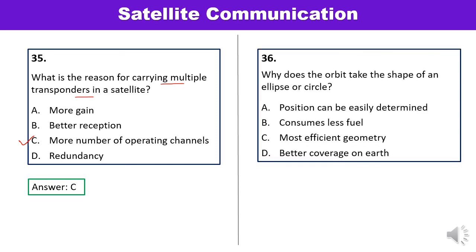Question 36: Why does the orbit take the shape of an ellipse or circle? Circles and ellipses are geometrical figures that can be accurately described mathematically. In this case, it is possible to calculate the position of the satellite at any instant of time — position can be easily determined. Answer A is correct.